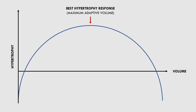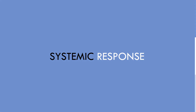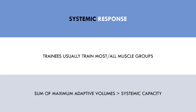We call this sweet spot maximum adaptive volume. However, trainees usually train all or most muscle groups of the body, not just one or two individual muscles. Therefore we need to consider the systemic response — how much total volume can be performed and still result in performance improvements. There is a limit to how much total volume can be performed before it breaches our systemic recovery capacity and performance declines. This is important because the sum of maximum adaptive volumes of each muscle group is greater than our systemic recovery capacity. In other words, if we train all our muscles at their maximum adaptive level, we will be performing too much volume to systemically recover from.